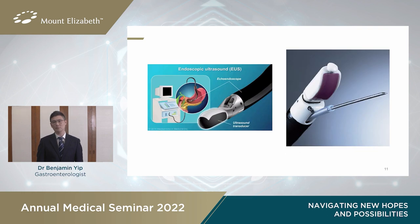The two pictures here depict EUS, in particular the linear type echoendoscope. As you can see, this is a fine needle being inserted down the scope channel, and it can be seen in real-time on ultrasound.